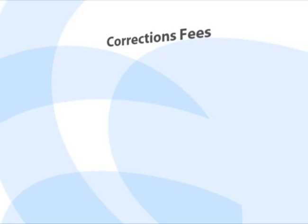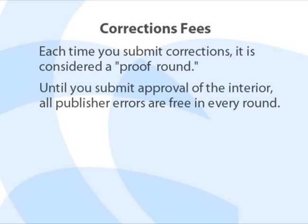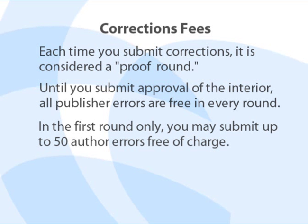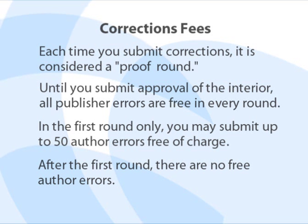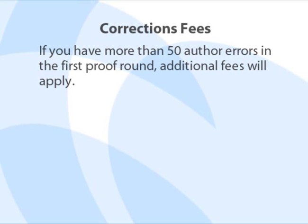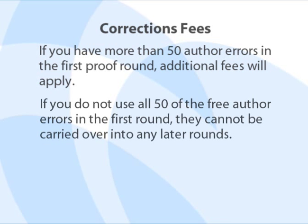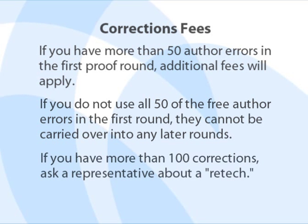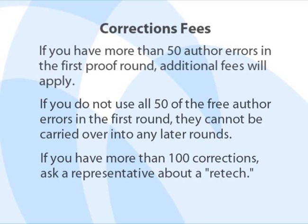Each time you submit corrections, it is called a proof round. Publisher errors are free in every proof round, but author errors are not. In your first proof round, you may submit up to 50 author errors at no additional charge. After the first proof round, there are no free author corrections. If you have more than 50 author errors in your first proof round, additional fees will apply. If you do not use all 50 free author error corrections in the first round, they cannot be carried over into any later proof rounds. If you have more than 100 corrections, a retech of your interior may be a more convenient and affordable option. Ask a representative for more information.